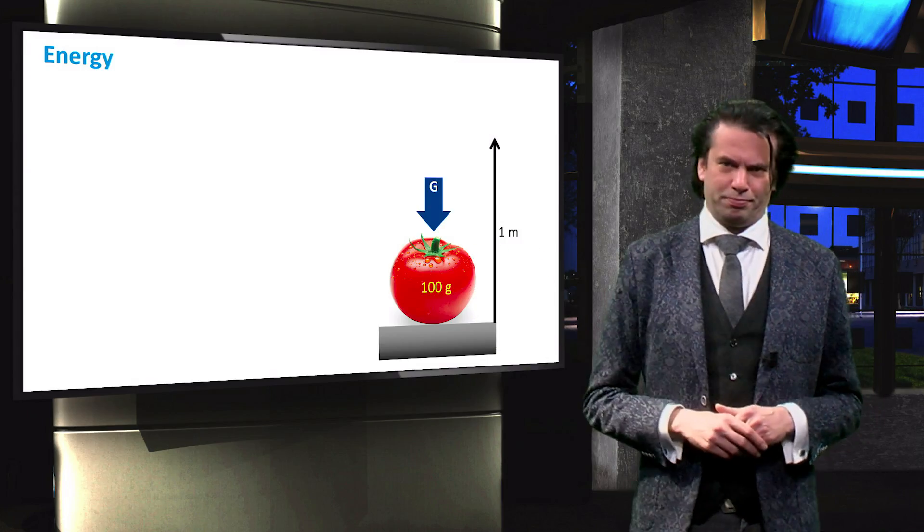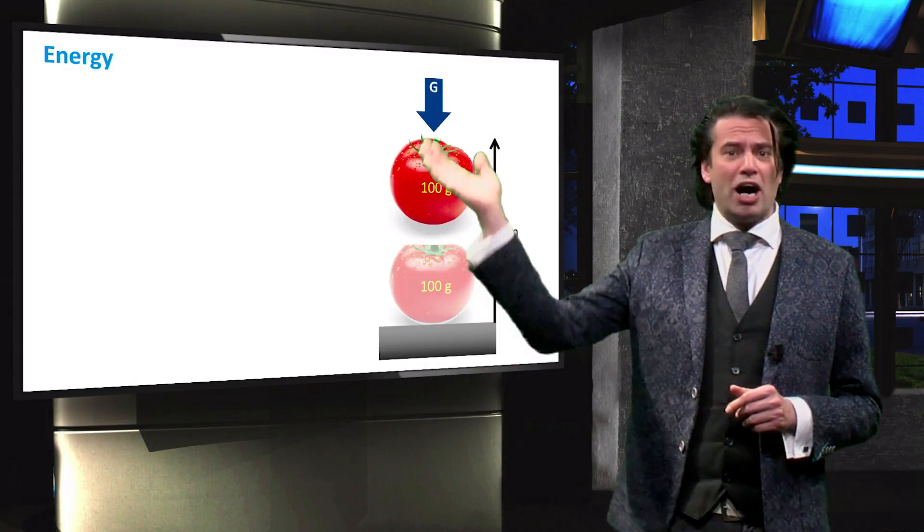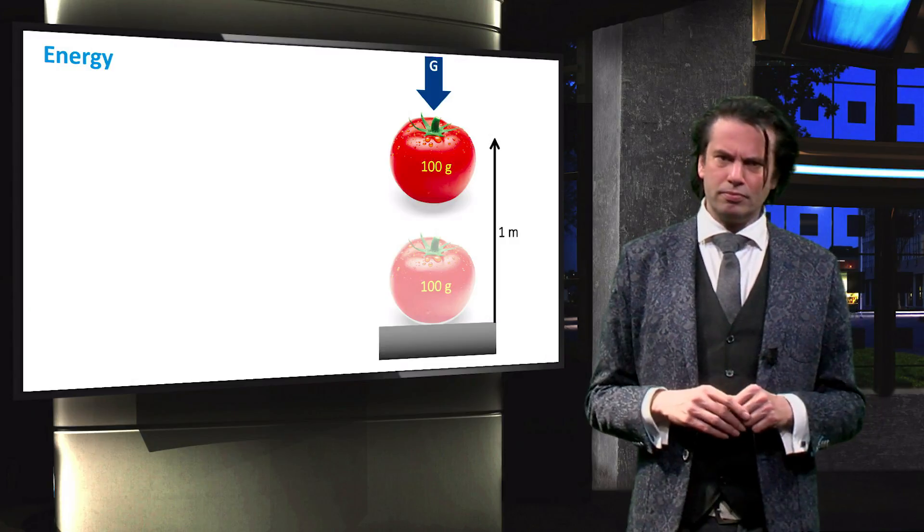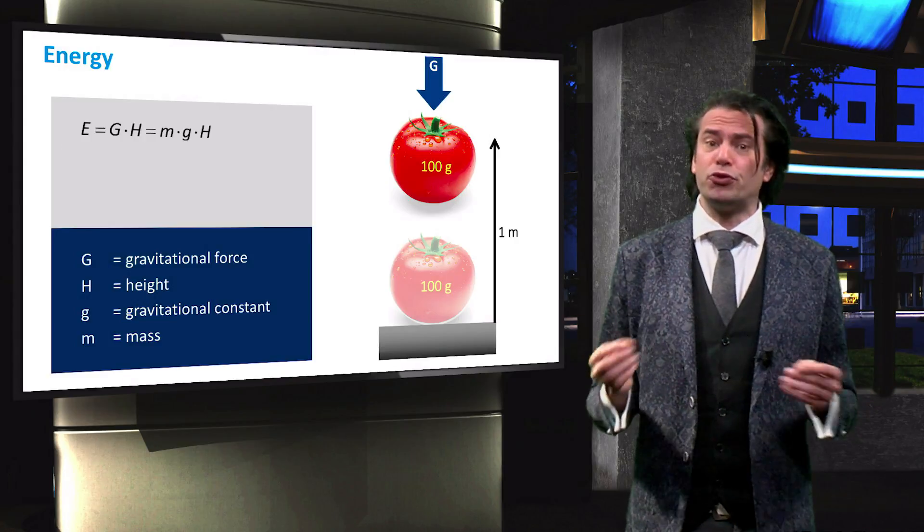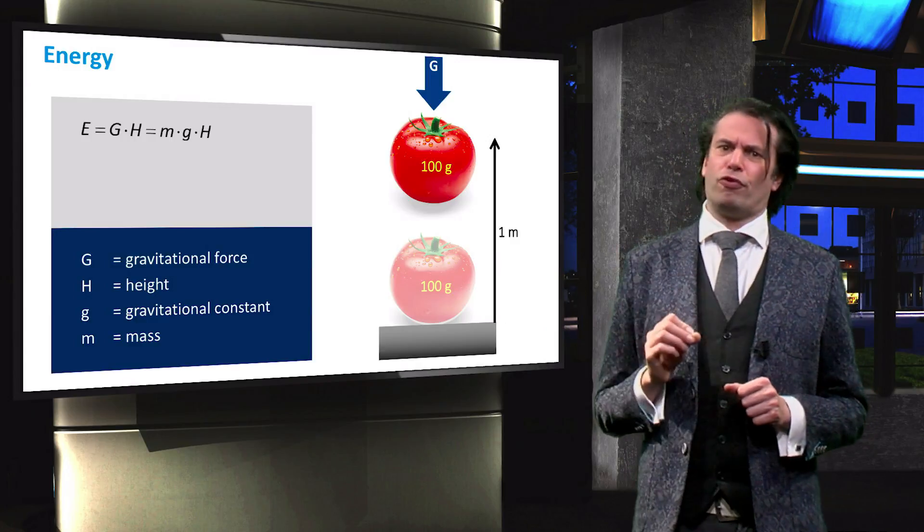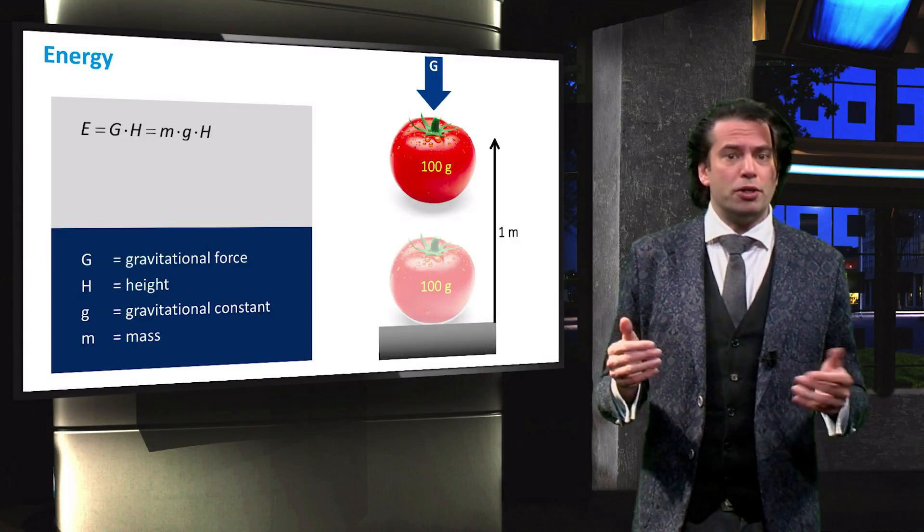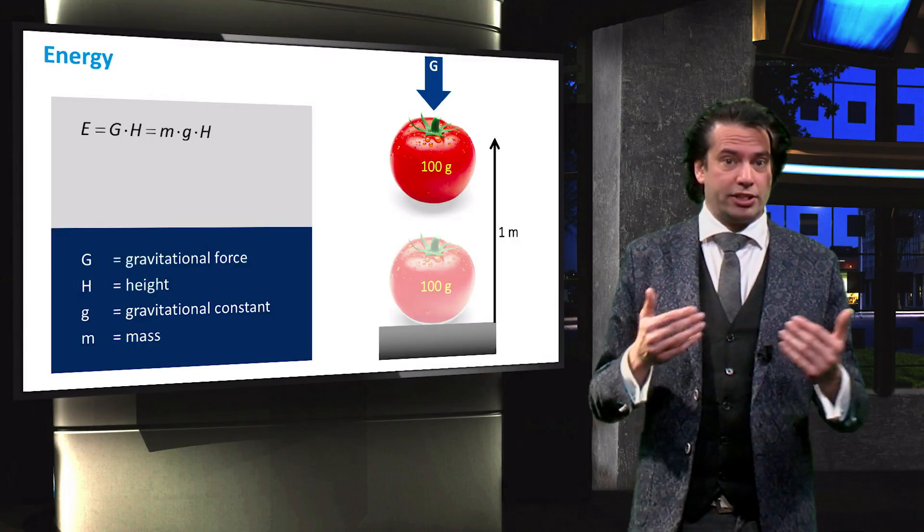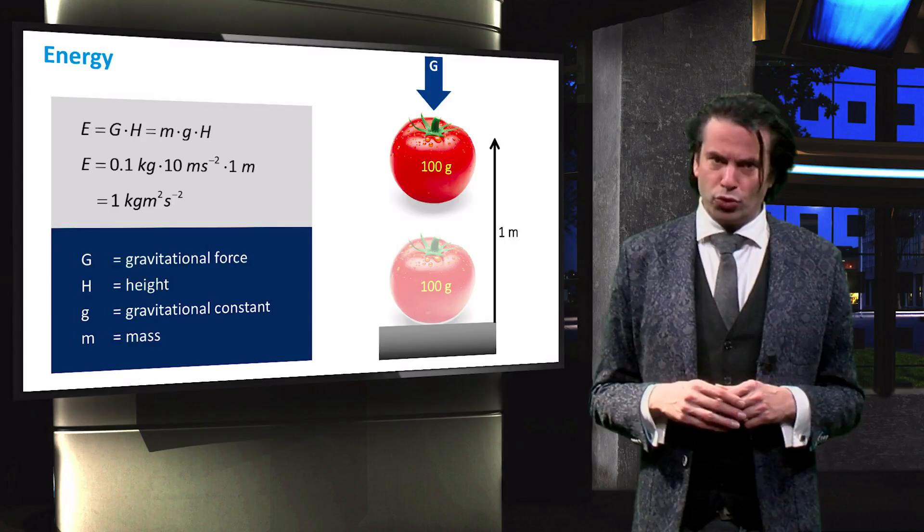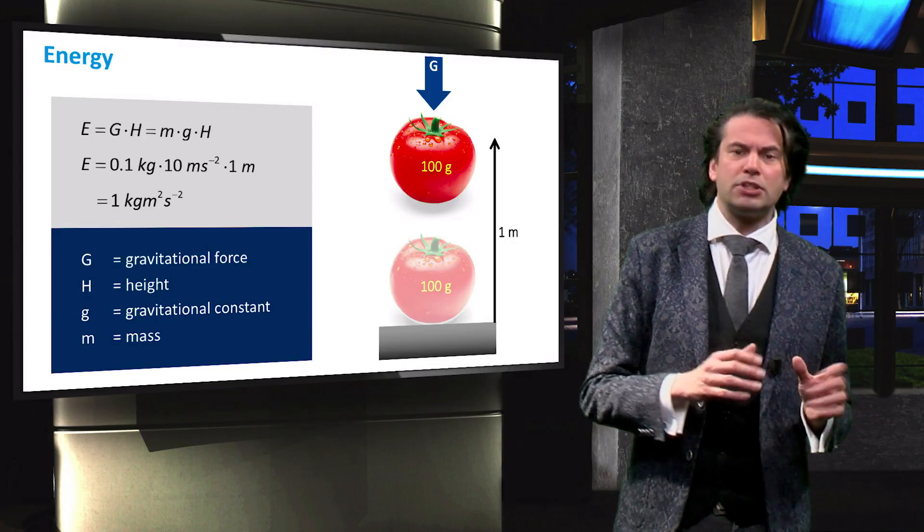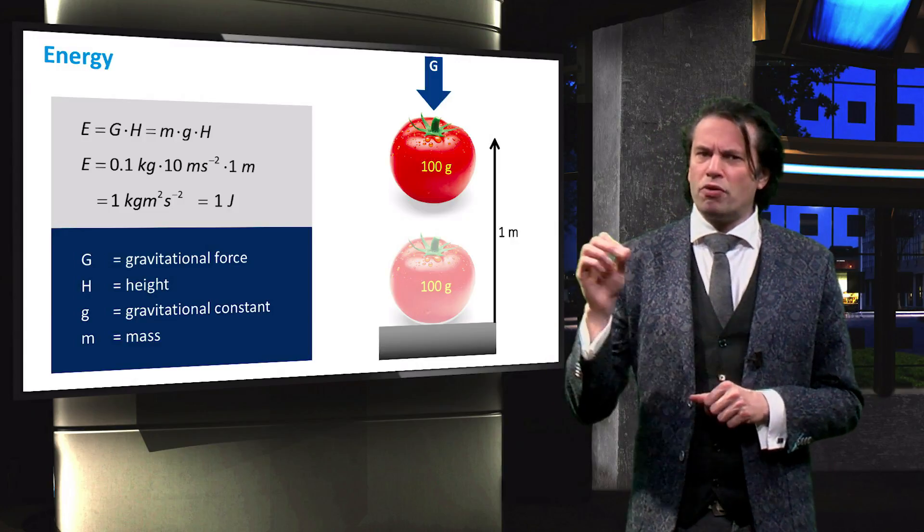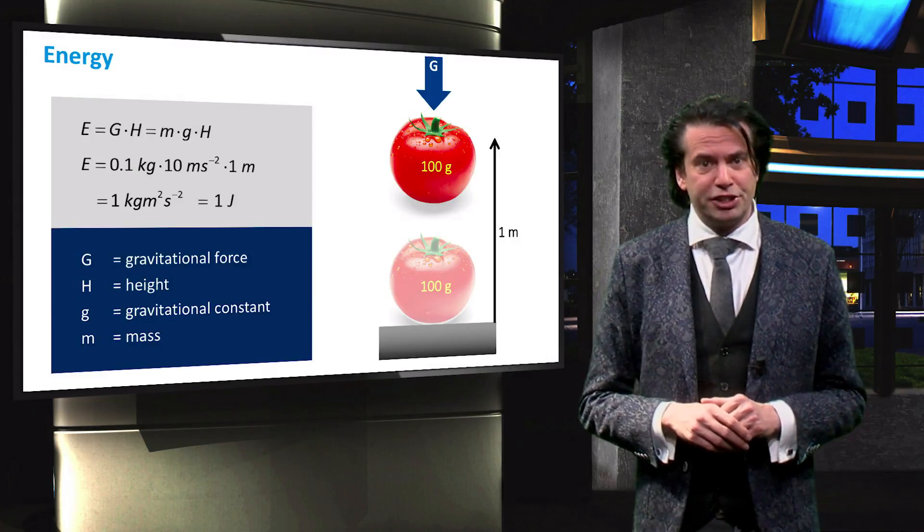Here we have a tomato. We lift the tomato up to a height of 1 meter, for which we have to overcome the gravitational force G. Since the required amount of energy is equal to the force times the distance, it is equal to G times the height h. The gravitational force near the surface of the earth is equal to the mass of the tomato times the gravitational acceleration, which is denoted by the lower case g. The amount of energy required to lift the tomato is therefore equal to 1 kilogram times meter squared per second squared. This is known as a joule, after the English physicist James Prescott Joule.